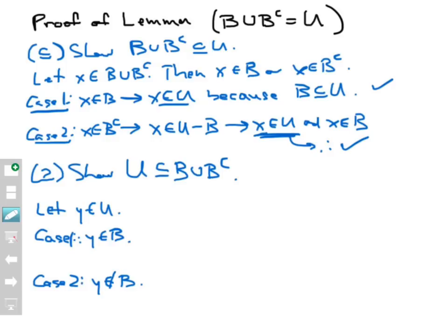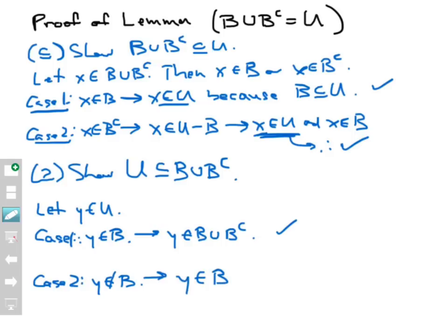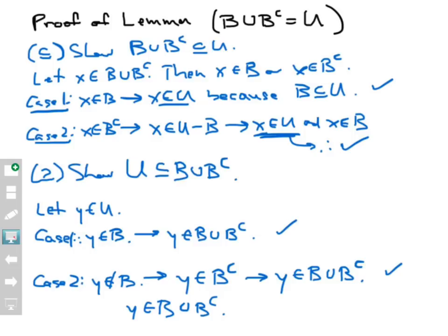If y belongs to B, then automatically y belongs to B union B complement, because union means y is either in B or in B complement — as long as y is in one of those sets, it's in the union. That gets case one out of the way. Case two: if y is not in B, then y would be in B complement — if it's not in B, it must be in the complement. Therefore, by the same reasoning, y is an element of B union B complement. Either way, y is in that union, and that proves the other half of the lemma. I've shown B union B complement is a subset of U and U is a subset of B union B complement, so B union B complement equals U.